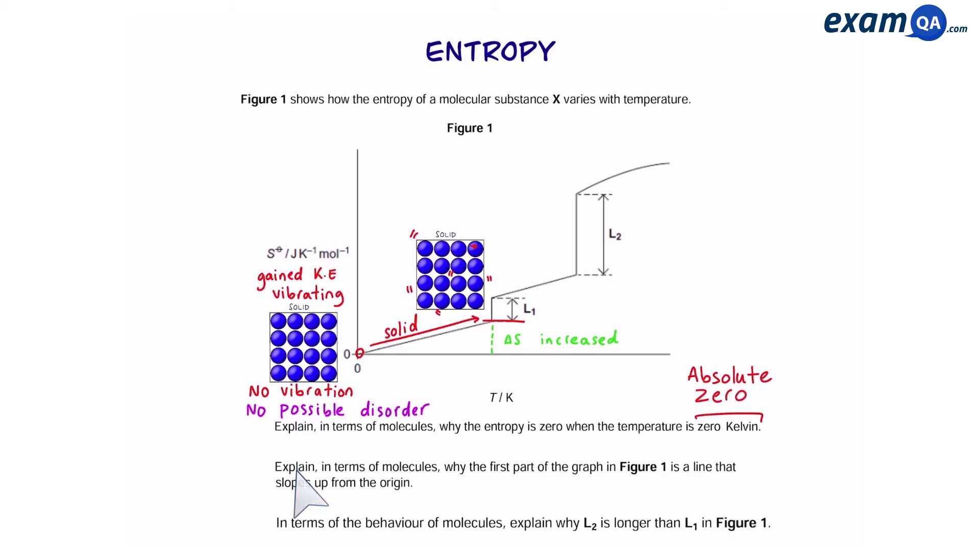Here's the next part of the question. In terms of the behavior of molecules, explain why L2 is longer than L1. So L1 is this line and this represents the substance turning from a solid into a liquid, or in other words it's melting. Of course we know that this will cause the entropy to increase.